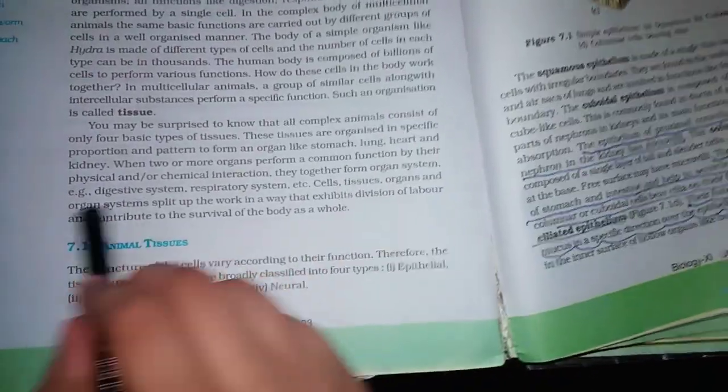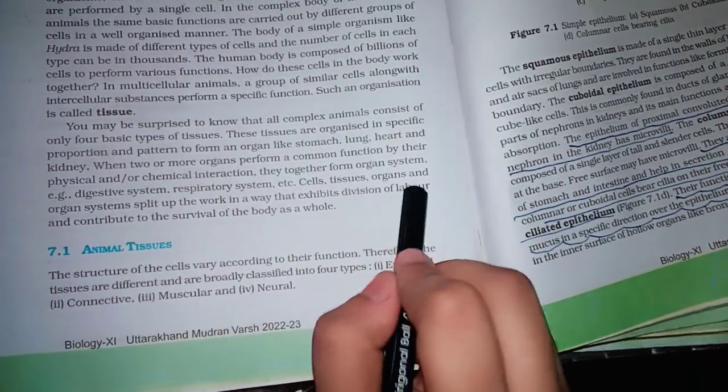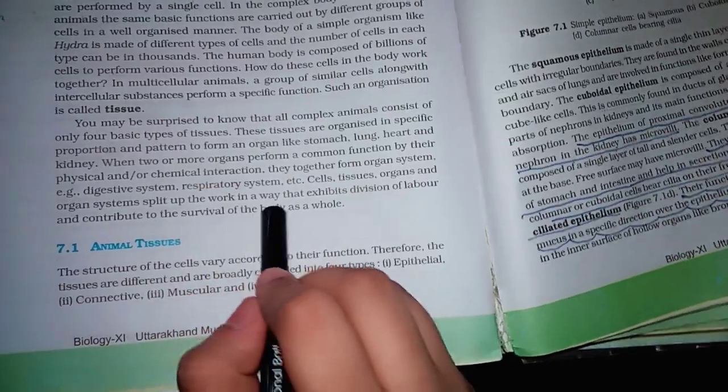Cells, tissues, organs and organ systems split up the work in a way that exhibits a division of labor and contributes to the survival of the body as a whole.